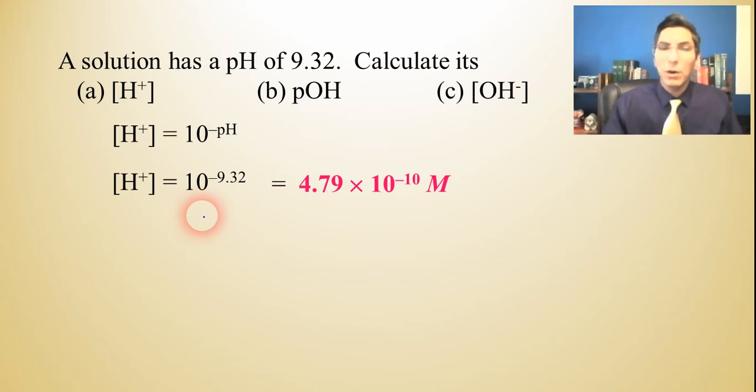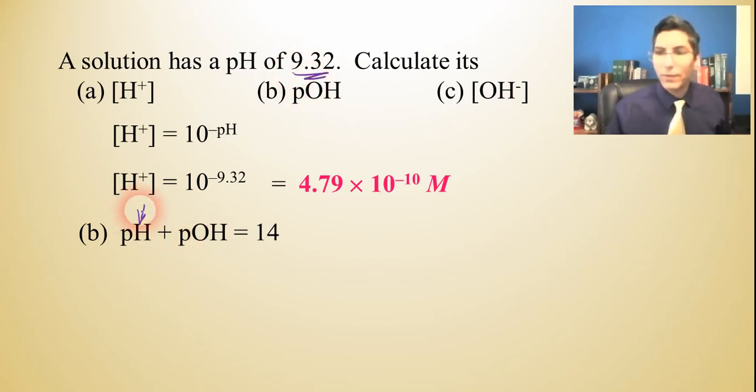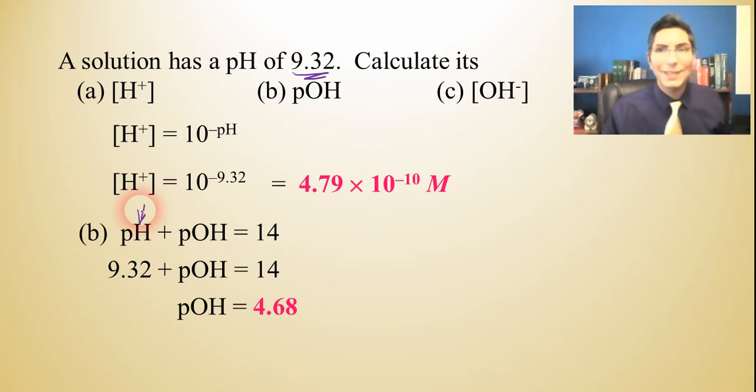Now, how do we find the pOH? Well, if you know the pH, it's pretty easy. pH plus pOH equals 14. So all we have to do is plug that 9.32 in for pH. And we're going to get 14 minus 9.32 is equal to our pOH, which is 4.68.